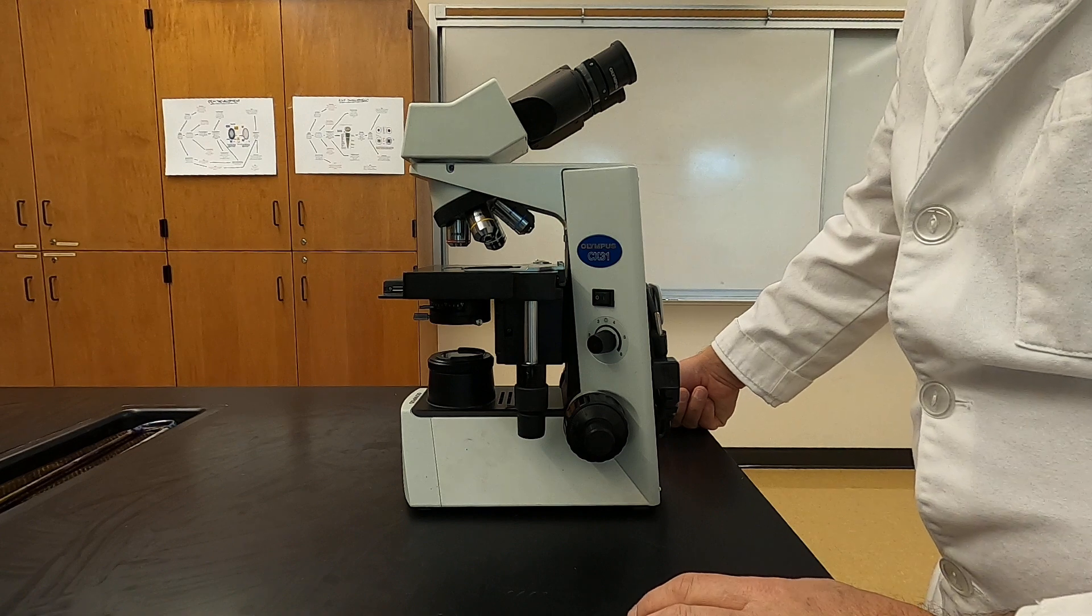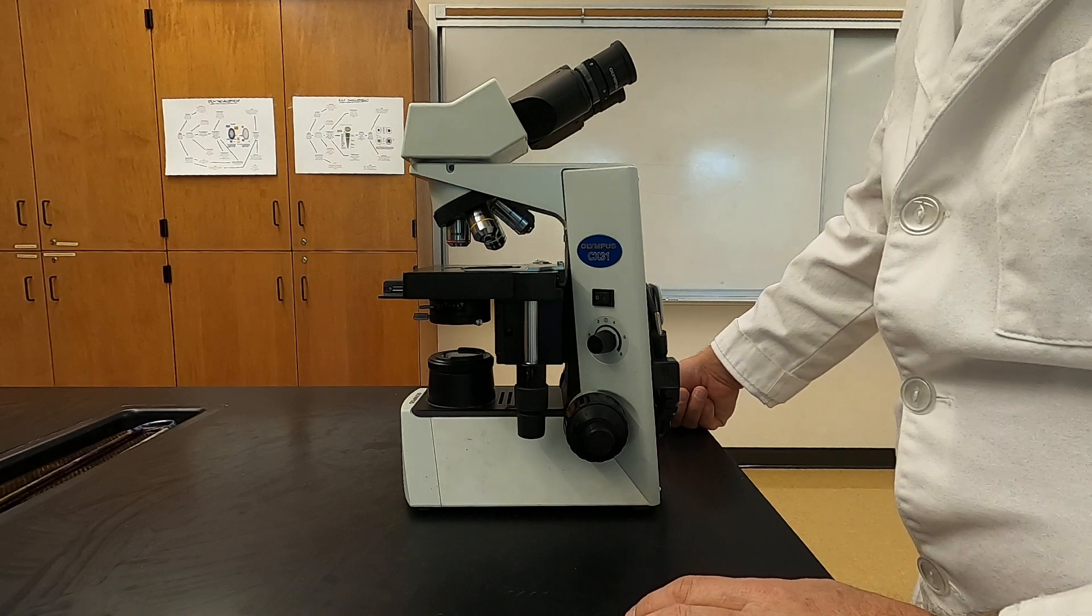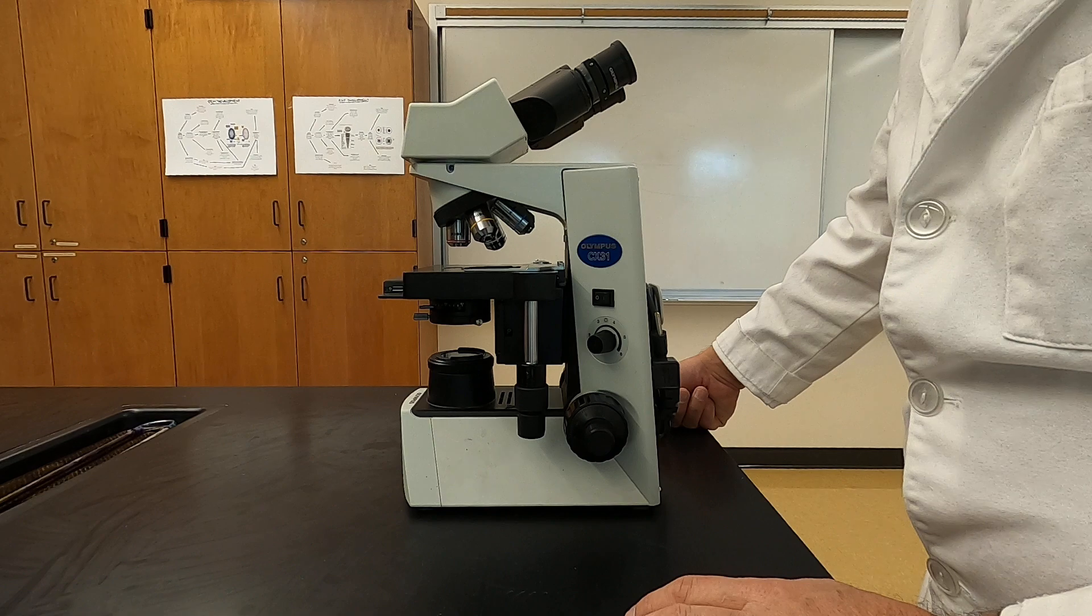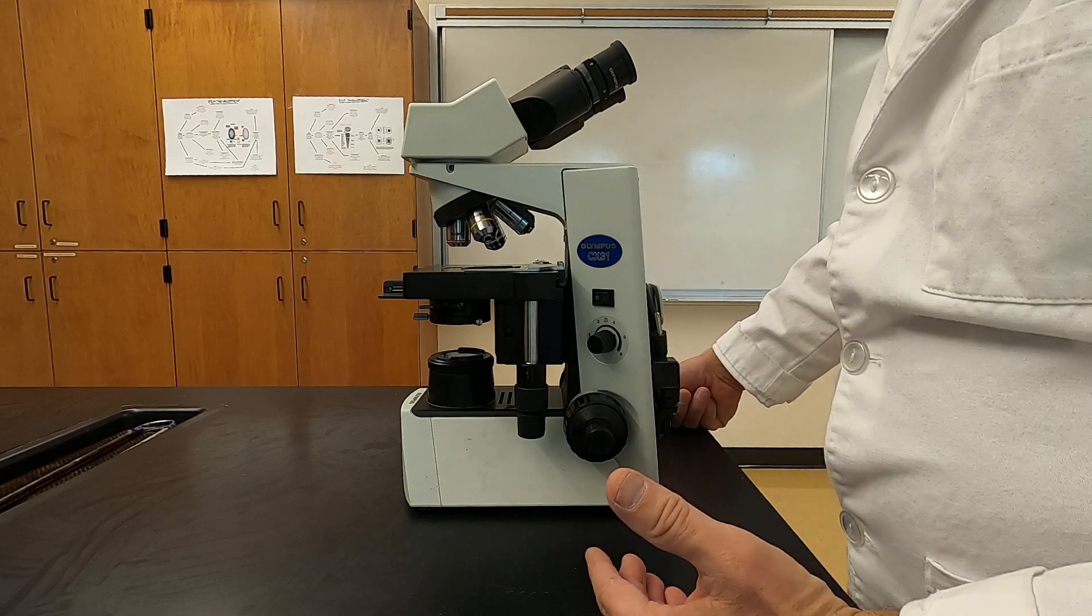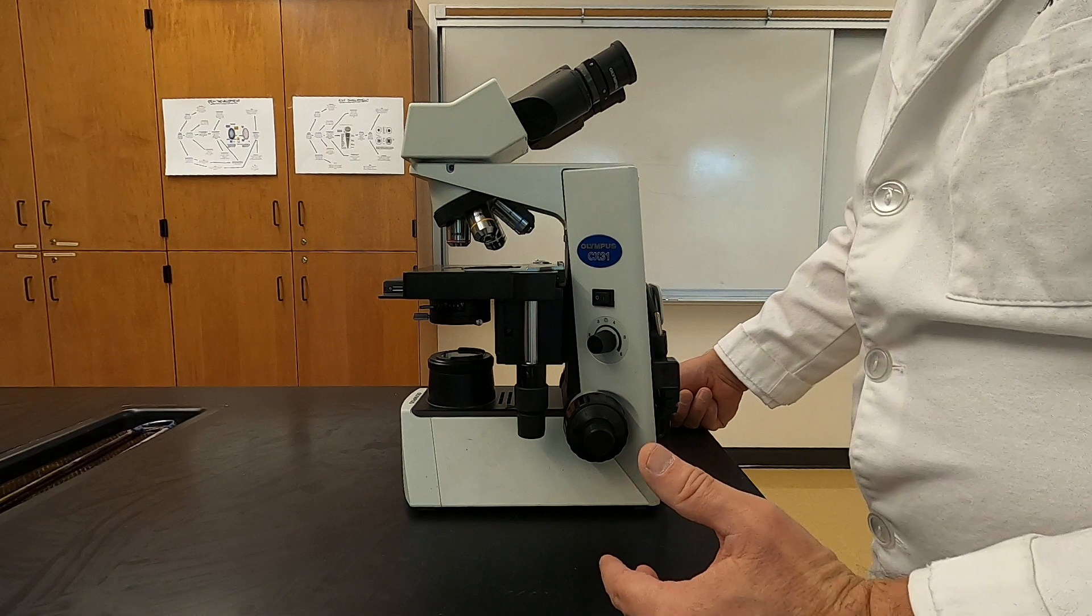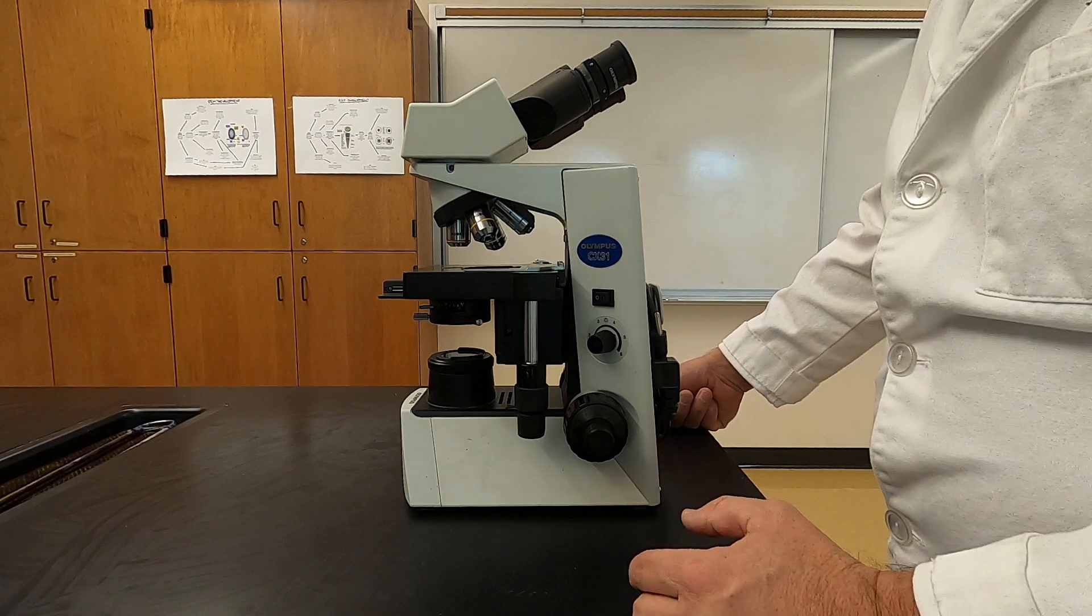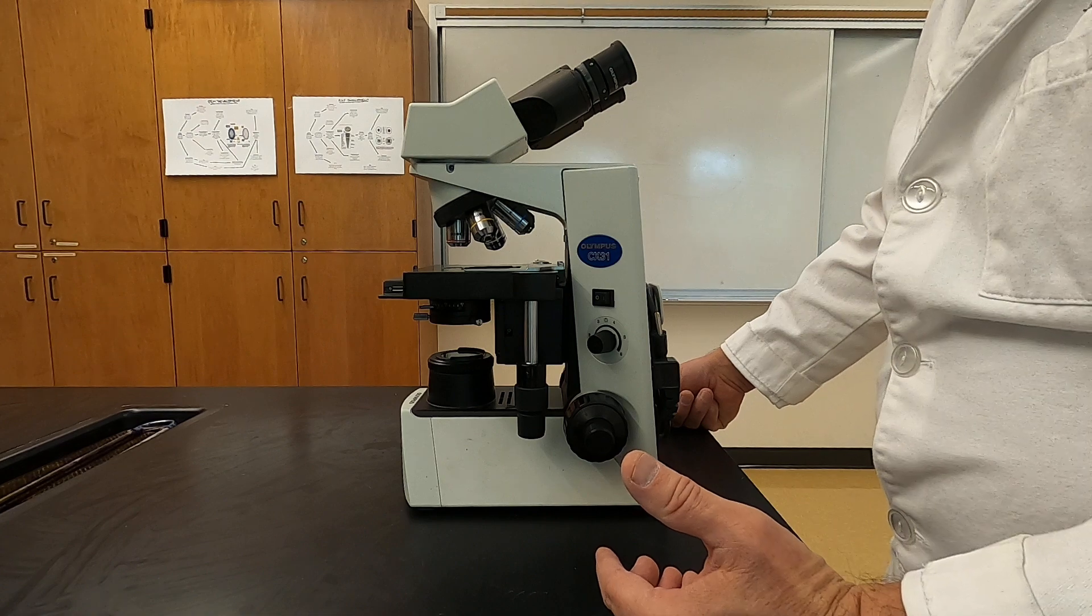That adjusts not only the light level that you have inside the scope as you're viewing it, but as you decrease the light, it also increases your contrast. Some of the things that we're going to be looking at in the microscope are very transparent or translucent.